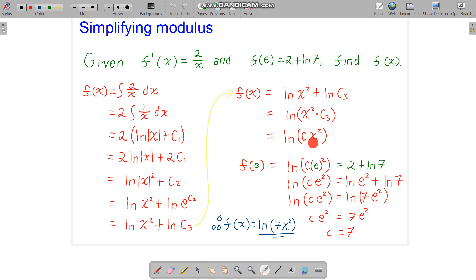So how can we find c? Well, we plug in the boundary condition or the information here. When x is e, y is 2 plus ln 7. So we replace x with e, and the result is supposed to be 2 plus ln 7. So if we simplify this, or rearrange this, we change this 2 into ln e squared,